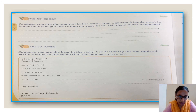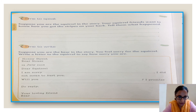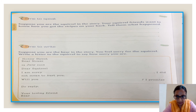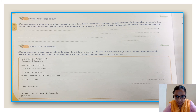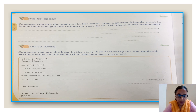Now let's move on to time to write. Suppose you are the bear in the story. You feel sorry for the squirrel — write a letter to the squirrel saying how sorry you are. Honey Street, Bear House, 15 July 2019. Dear Squirrel, I am sorry for my mistake. I did not mean to hurt you. Will you please forgive me? I promise to be a good bear and also your good friend. Do reply. Your loving friend, Bear.